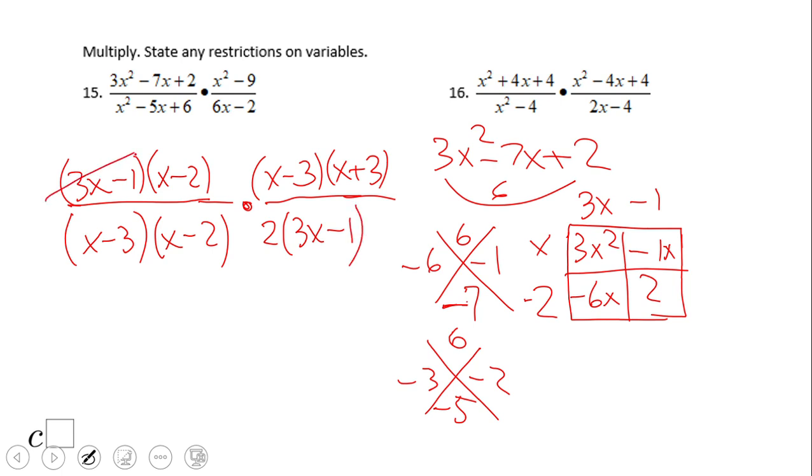And let's see now what we can simplify. If you notice, 3x minus 1 here, 3x minus 1 here, they cancel out. x minus 2 and x minus 2, x minus 3, x minus 3. So the final answer for this problem will be x plus 3 over 2.